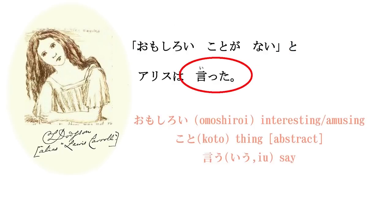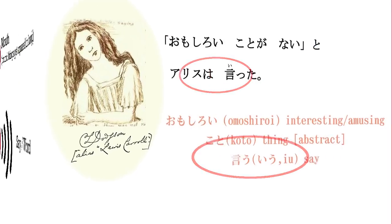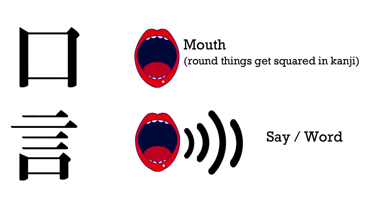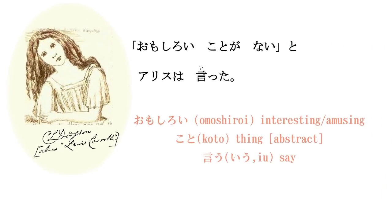Itta – iu means say, and you can see it's like a mouth with sound waves coming out of it. But the important thing to notice here is that little particle to. There are actually two to particles: one means and, and the other is what we call the quotation particle, and that's what we're dealing with here. When we quote someone as saying something or even as thinking something, we use this particle to.